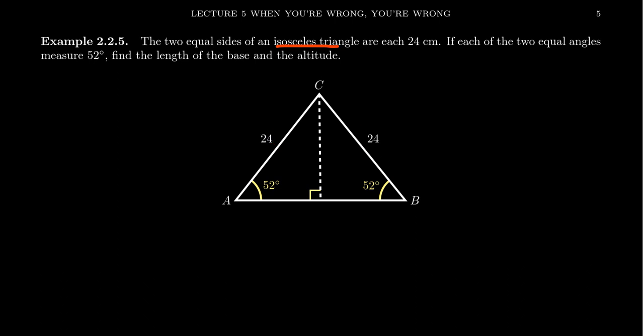Now with an isosceles triangle, if we have two congruent sides, then it's also true that we'll have two congruent angles. That is, the angles opposite the two congruent sides will also be congruent to each other. Let's say that their shared angle measurement is 52 degrees, so angle A and angle B are both 52 degrees.